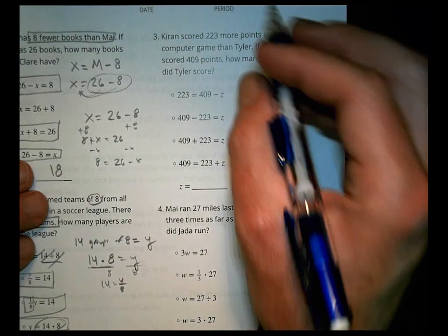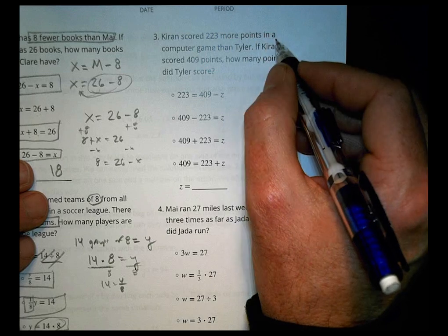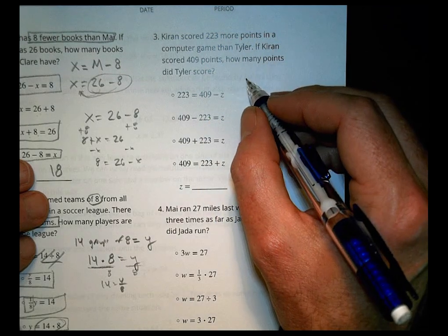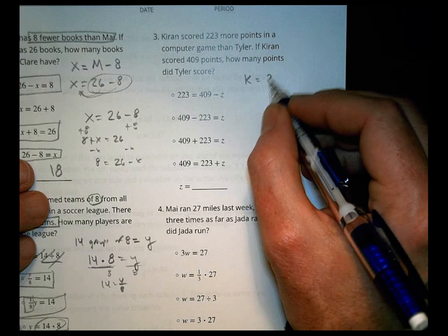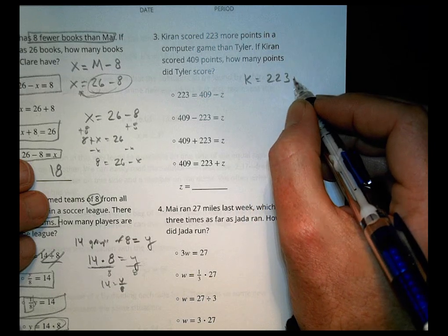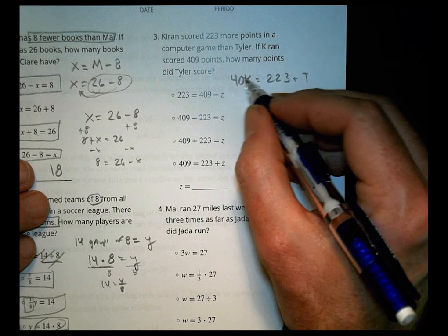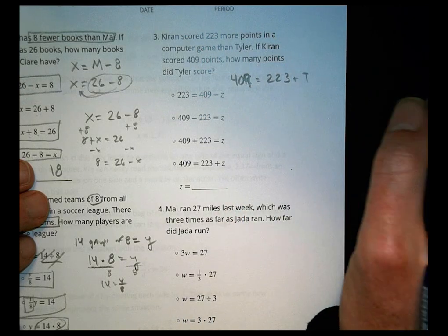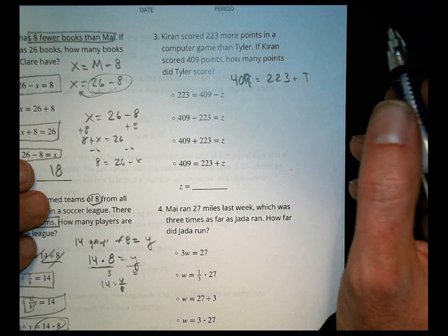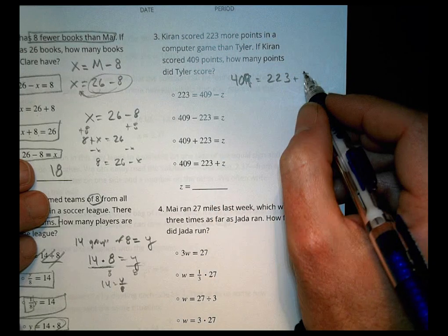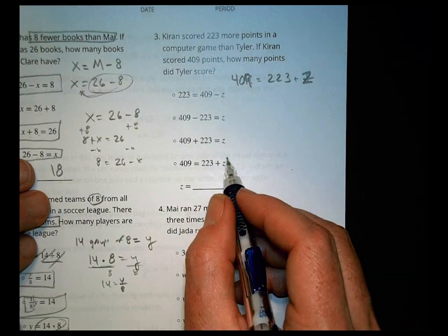For number three, it says, Kieran scored 223 more points in a computer game than Tyler. Right? Way to go. So what does Kieran have? Kieran has 223 more points than Tyler. If Kieran scored 409 points, so 409, put that right there. How many did Tyler score? So we have 409 equals 223 plus T, or in this case here it says Z. So we can see that right there.